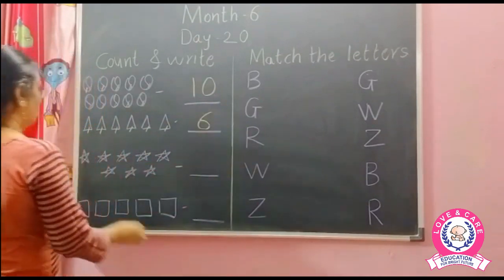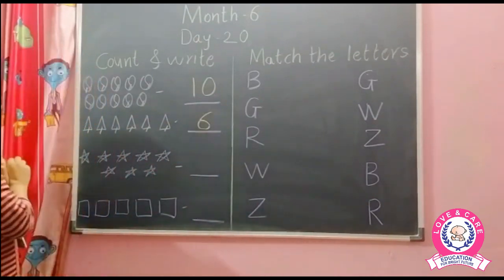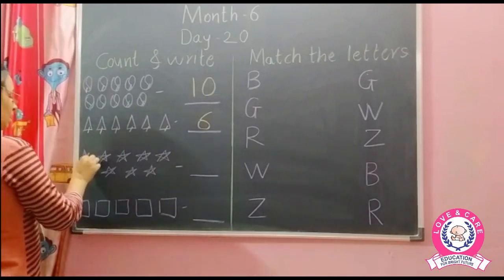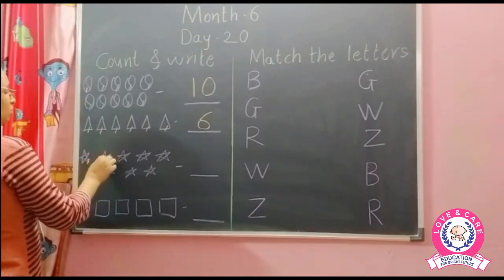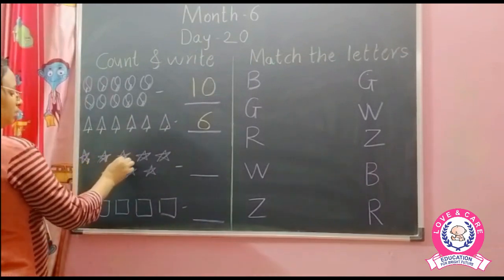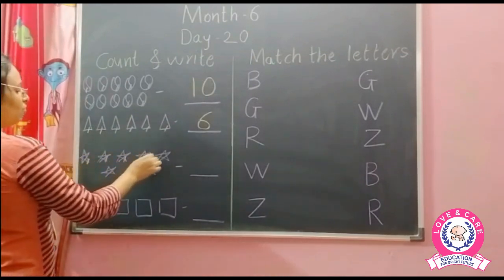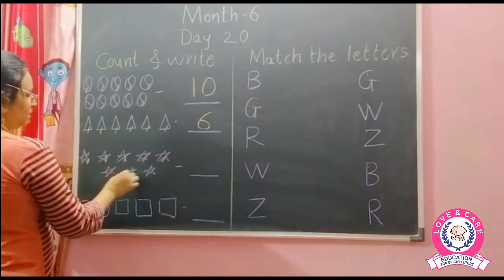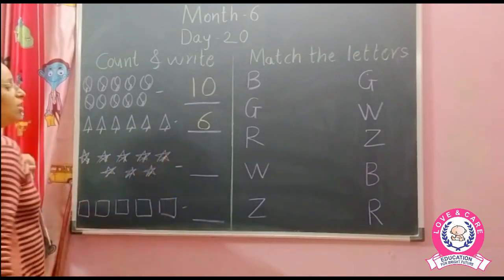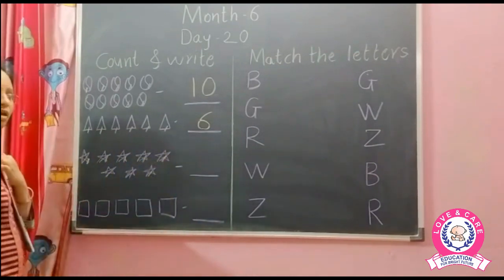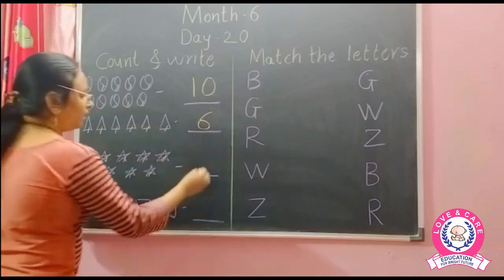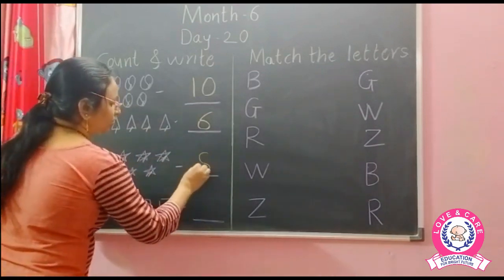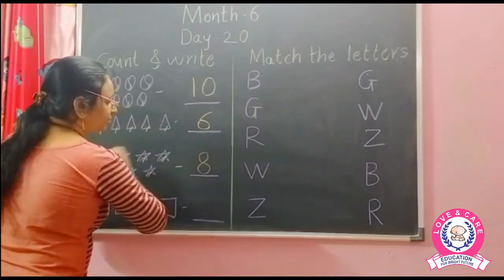Now next — stars. How many stars? Count the stars: 1, 2, 3, 4, 5, 6, 7, 8. How many stars? 8. So write here number 8. Good.